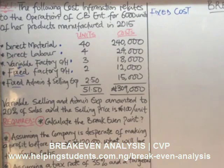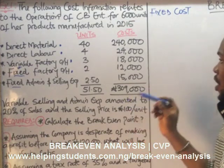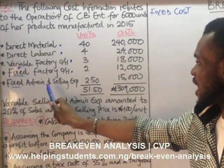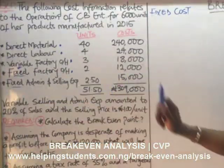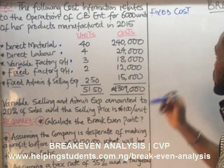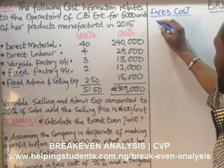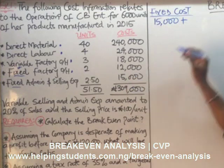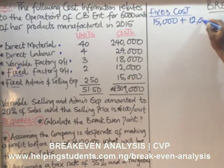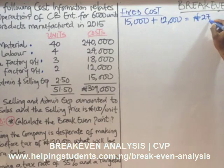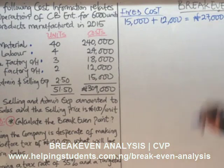With the steps from the board, the fixed factory overhead is $12,000 and the fixed admin and selling expenses is $15,000. These two values represent our fixed costs. So our fixed costs are $15,000 plus $12,000, which equals $27,000.